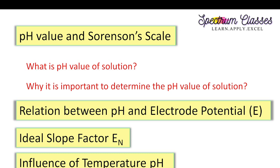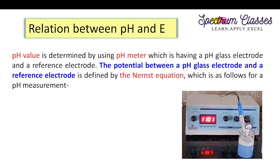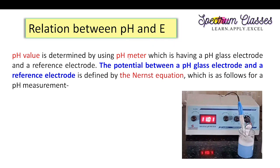Right now, the relationship between pH and electrode potential — this E here is the electrode potential. So this electrode potential is connected with pH, and this is how the pH meter works. The detailed functioning of the pH meter I will discuss in the next video, but here I just define the relationship between pH and electrode potential.